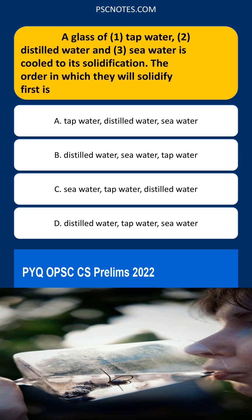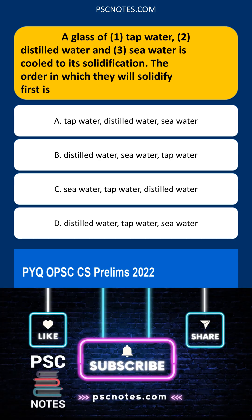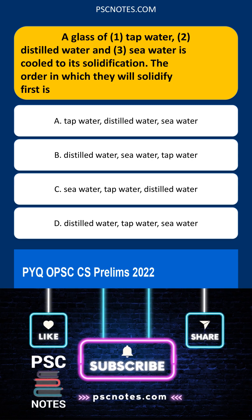Tap water contains dissolved minerals and impurities, lowering its freezing point slightly. Seawater contains a high concentration of dissolved salts, significantly lowering its freezing point to below 0 degrees Celsius.